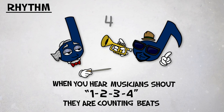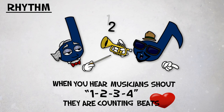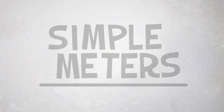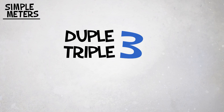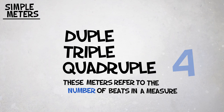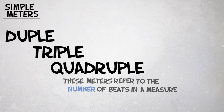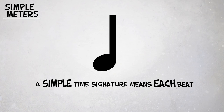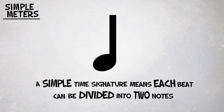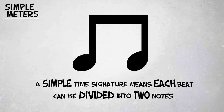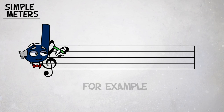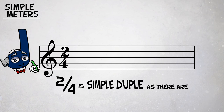Simple meters — duple, triple, and quadruple — refer to the number of beats in a measure. A simple time signature means each beat can be divided into two notes. For example, two-four is simple duple, as there are two beats per measure.